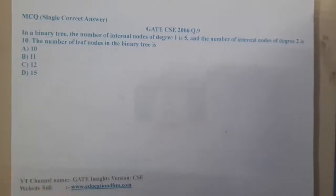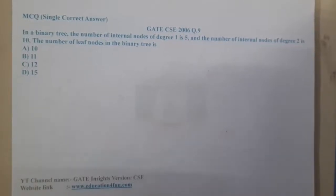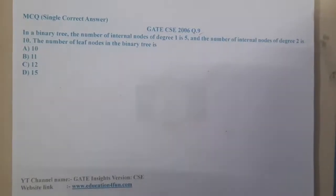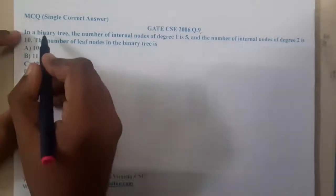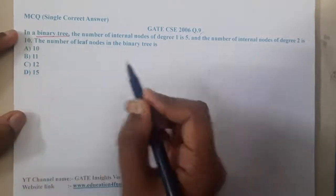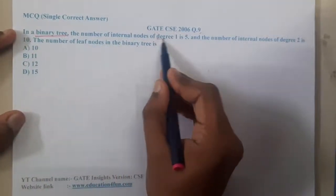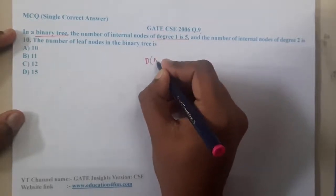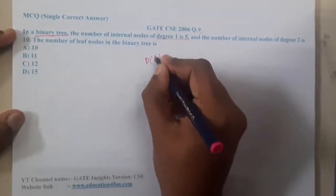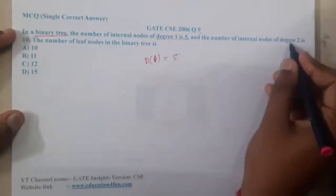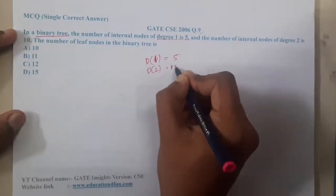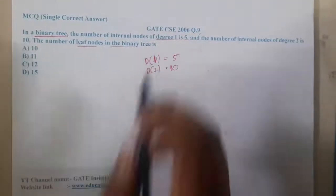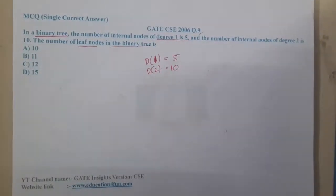Welcome back. In this lecture, let us continue with the next question — GATE CSC 2006, question number nine. In a binary tree, the number of internal nodes with degree one is five, and the number of nodes with degree two is ten. This is a logical type of question: how many leaf nodes are in the binary tree?